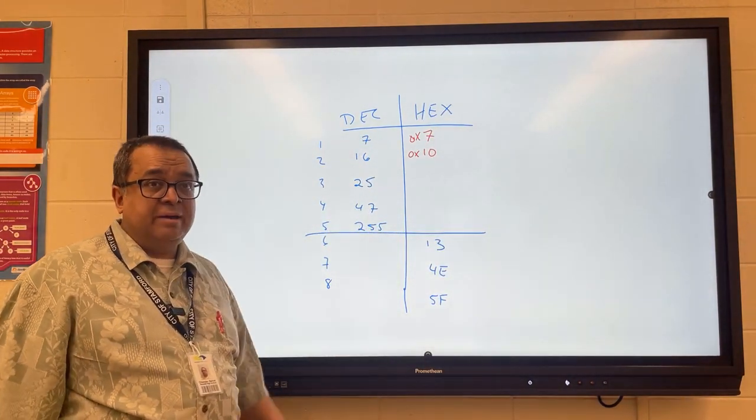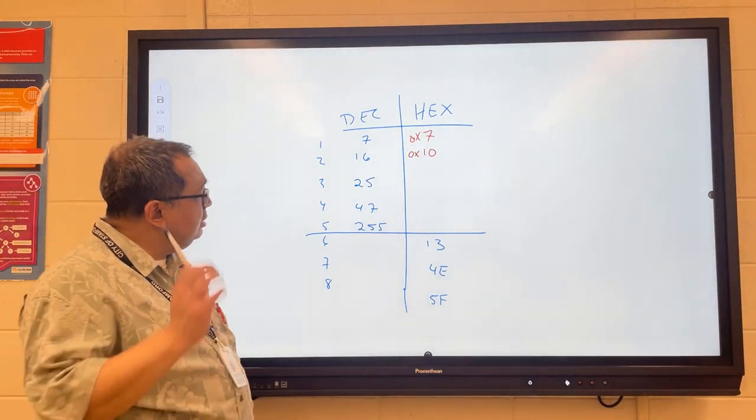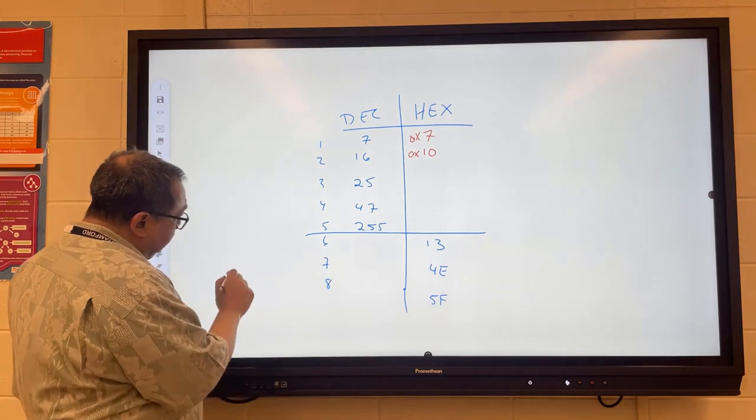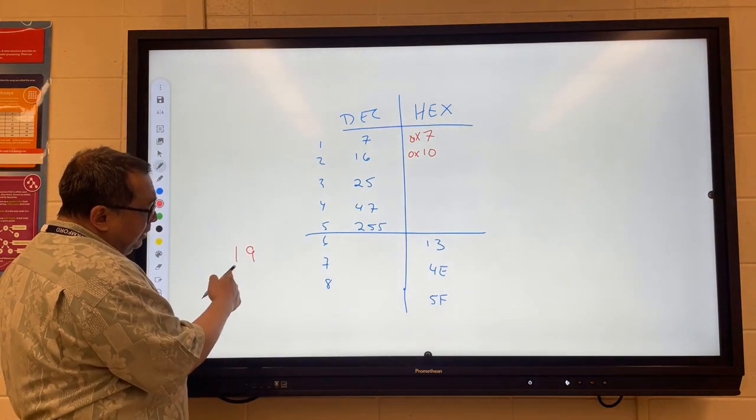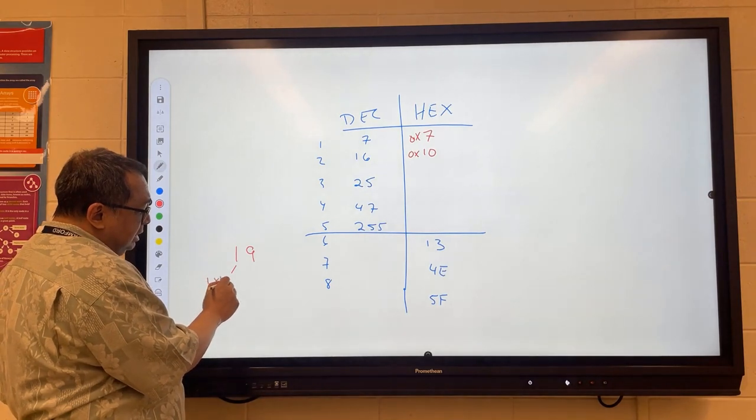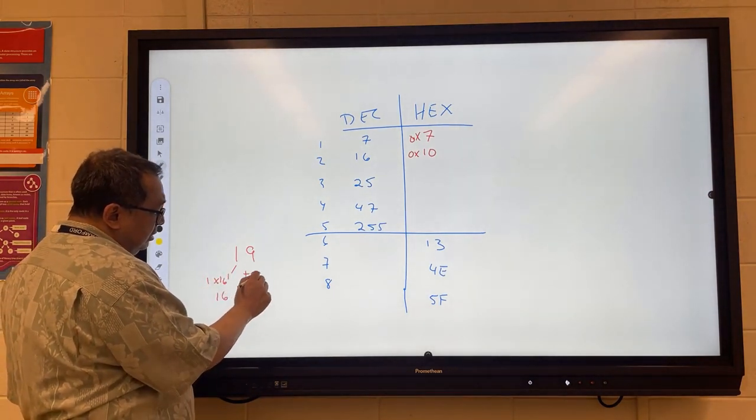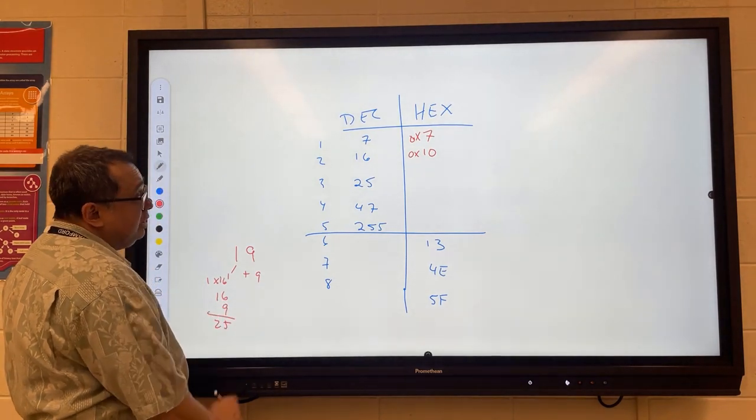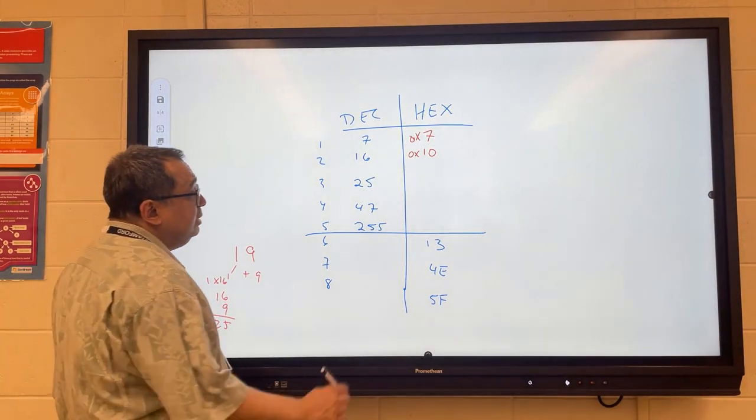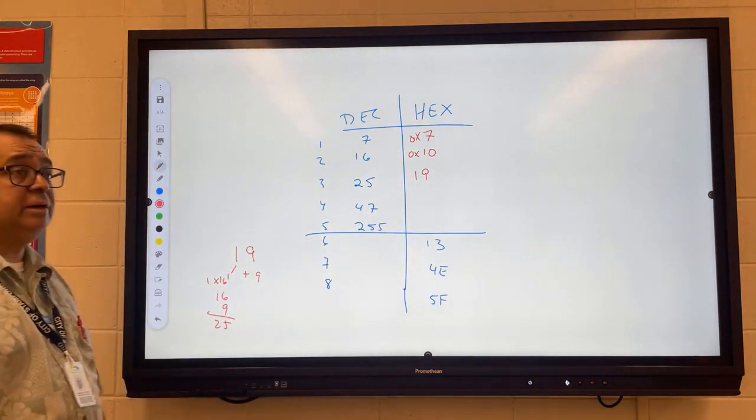Now we're going to do 25. Yes, sir? 19. So if we looked at 19, that would be 16, this part is 16, this is 1 times 16 to the first, that's 16, plus the 9. So how much is that? That's 25. See that? So this is 19. Once again, there should be a 0x in front of it there like that.